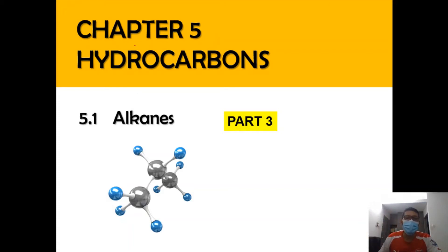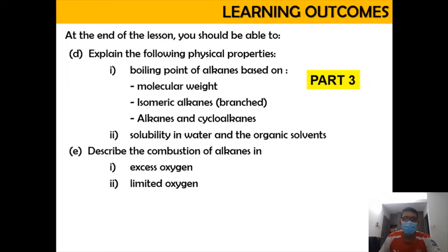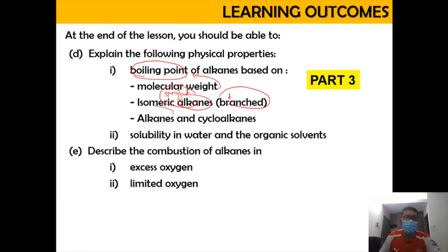Hi, Assalamualaikum and very good morning. We are now in Chapter 5 on hydrocarbons, focusing on subtopic 5.1 Alkanes, Part 3. In this video we're going to explain the physical properties of alkane, focusing on boiling point — specifically the effect of molecular weight, the difference between straight-chain and branched alkane, alkane vs. cycloalkane boiling points, solubility in water and organic solvents, and combustion in excess and limited oxygen.